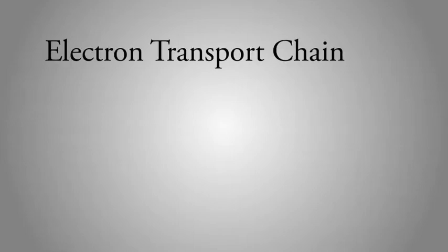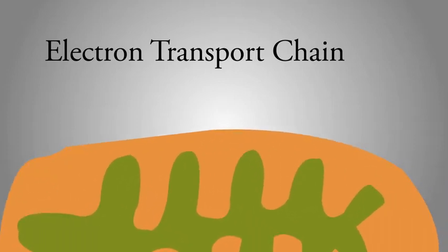The grand finale of cellular respiration is called the electron transport chain, which takes place inside the mitochondria of a cell. Mitochondria have an inner area called the matrix and an outer area called the intermembrane space, separated by a membrane.